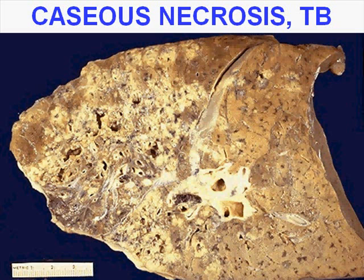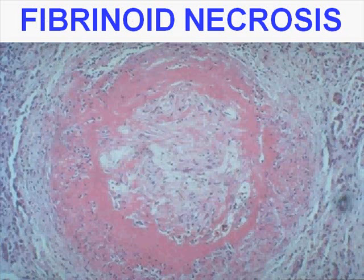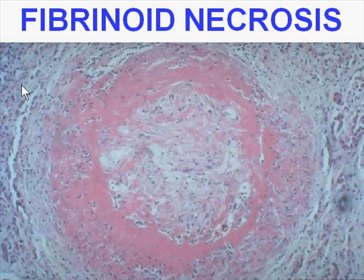Here is a blood vessel that has a finely hyaline pinkish granularity to its wall which has the H&E characteristics of fibrin but many other things do too. So this is called fibrinoid necrosis and when you hear fibrinoid necrosis you think it's probably going to be in a blood vessel.